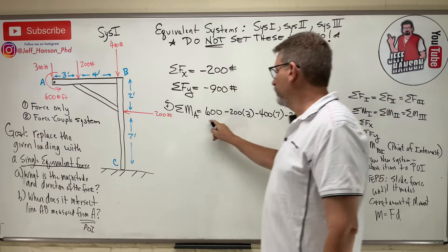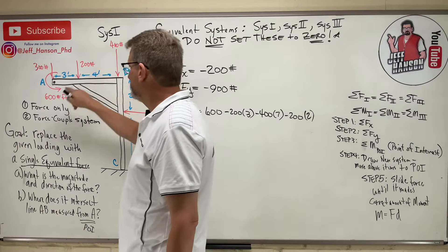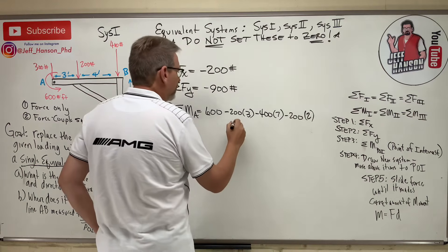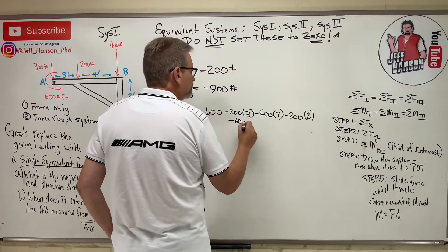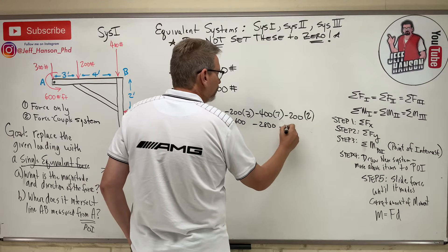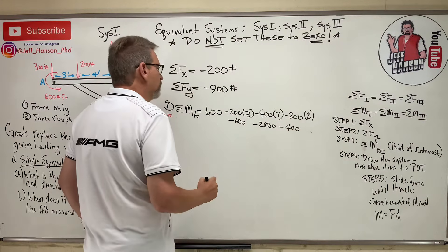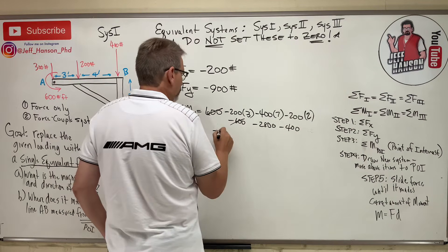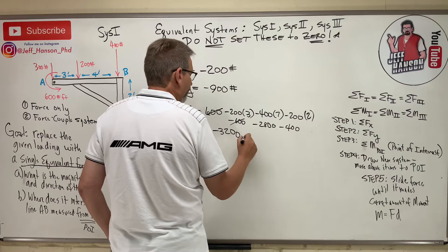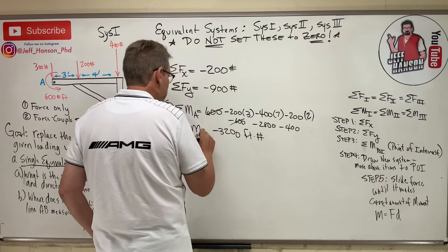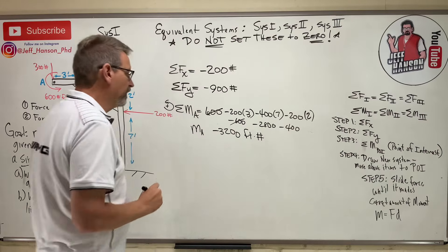And that's it. Let's see what that is. That's 600. 400 times 7 is 2800. And then that's minus 400. So, 600 minus 600 is 0, and that's minus 3200. So, that's the moment at A. There we go.